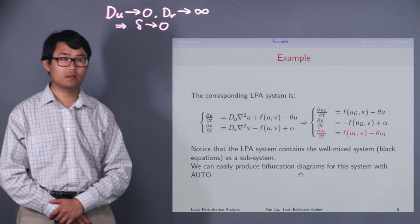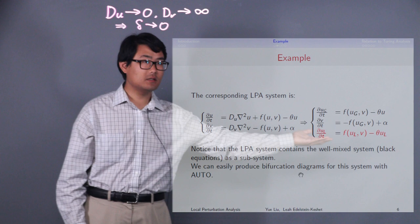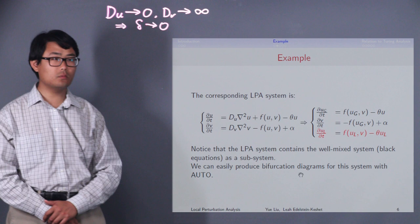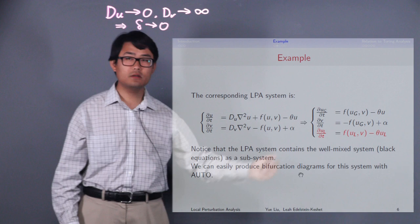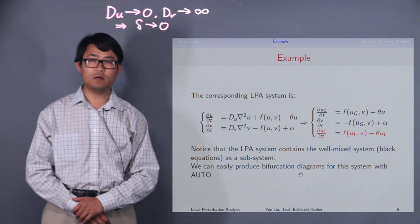Let us follow the recipe and transform the PDE into the LPA system, which is here. Notice that the LPA system contains the well-mixed system as a subsystem, the black equation here, which means LPA can tell us everything the well-mixed system can tell us. We can easily produce bifurcation diagrams for this system with auto.